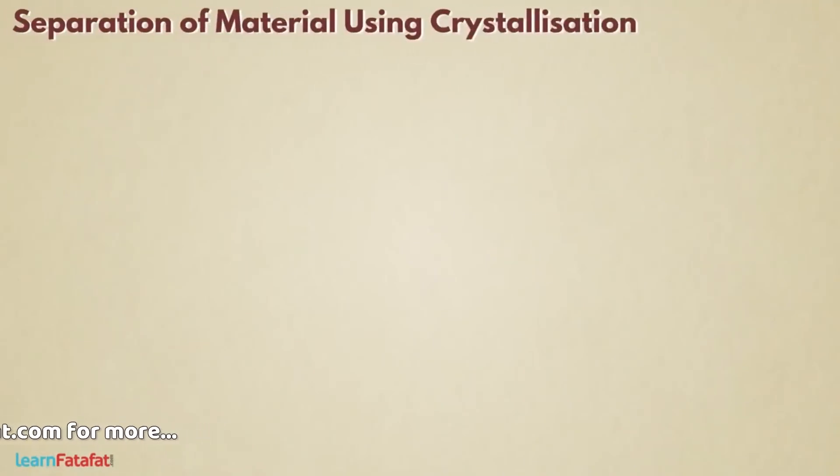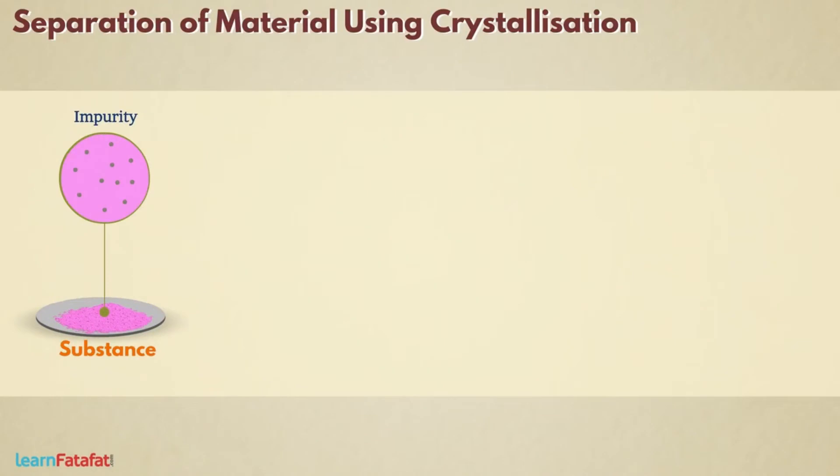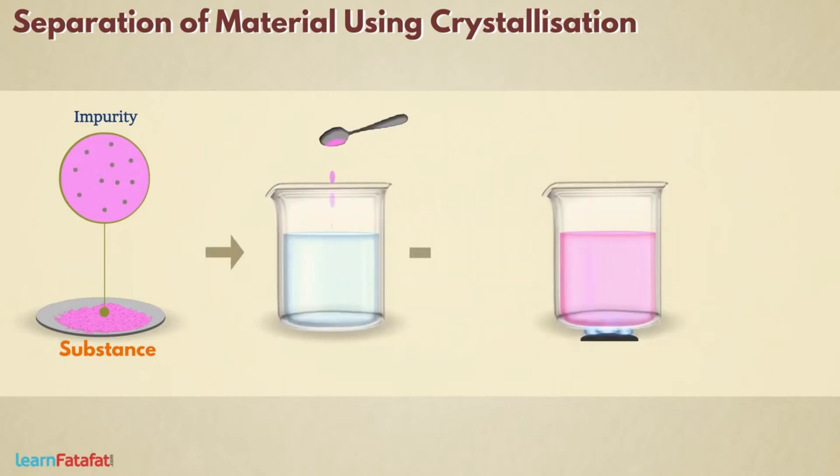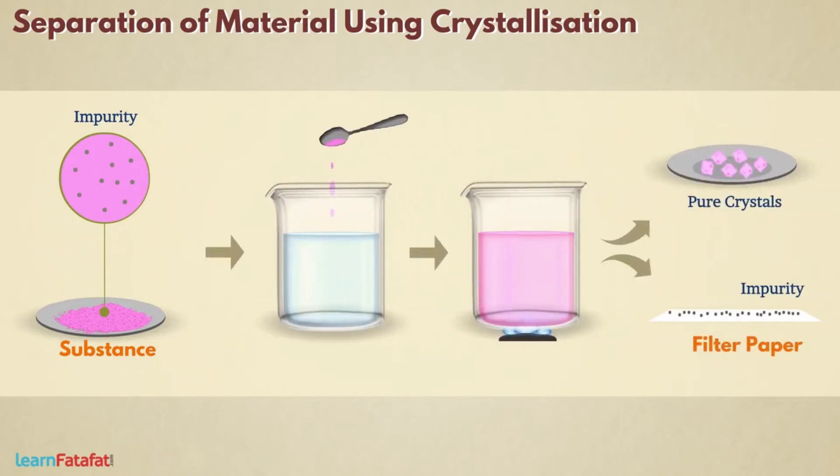Separation of material using crystallization. Many times we obtain substance in impure form, meaning it contains impurity of other unwanted substances. If the substance has ability to dissolve in water then we use crystallization for separating it from the impurity.